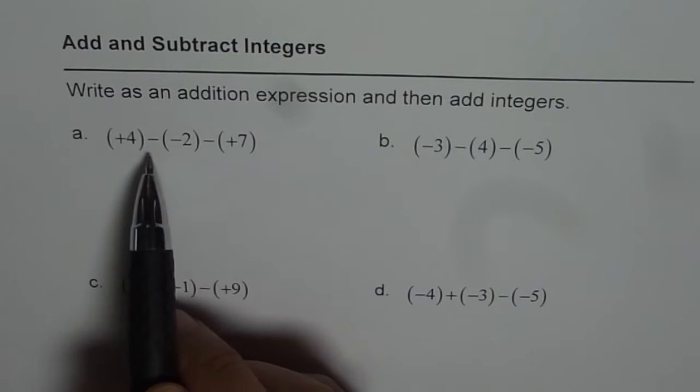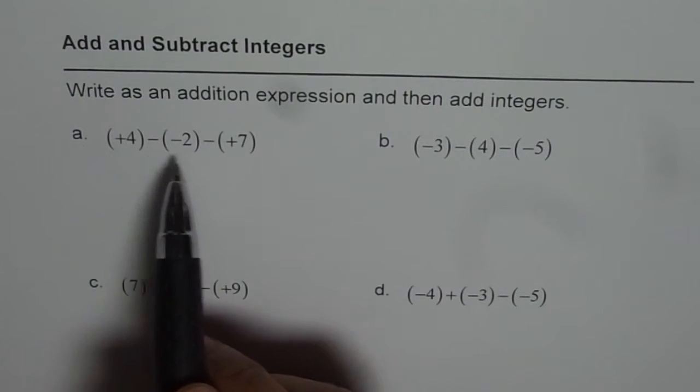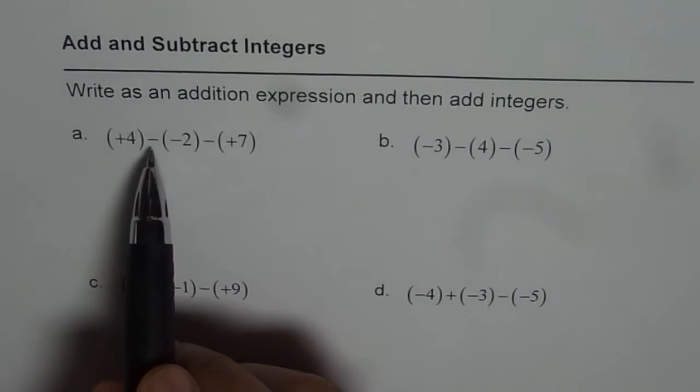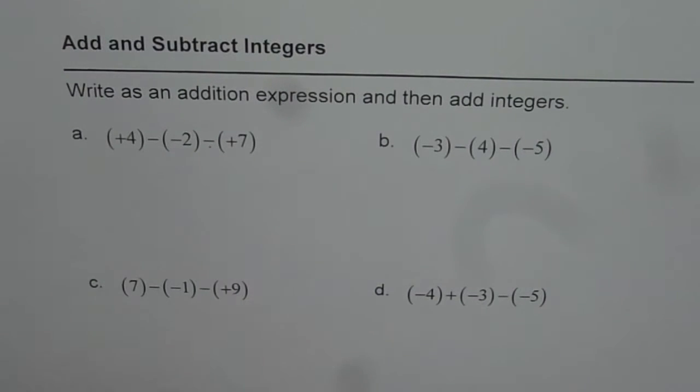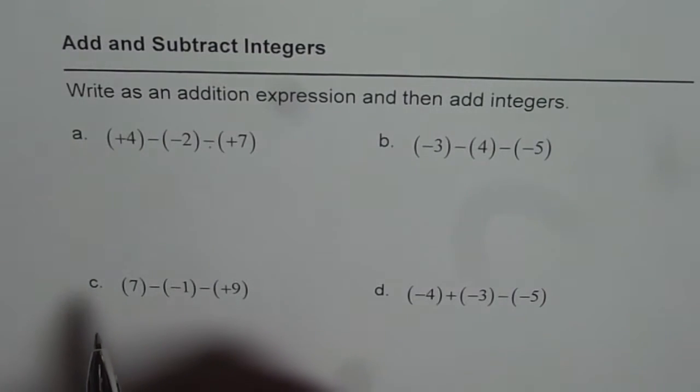A is plus four minus minus two minus plus seven. Let us write this expression with positive signs. That means instead of takeaways we will make it addition. So for that we just need to reverse the sign. So let us do it.